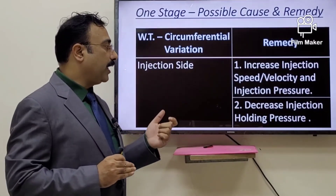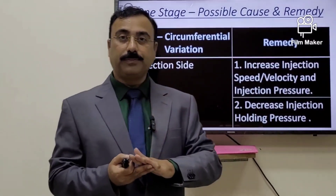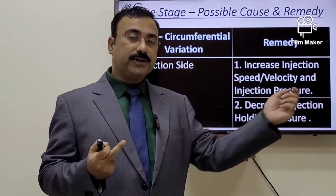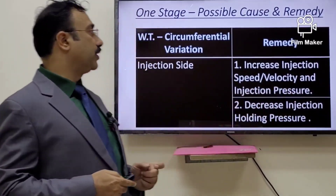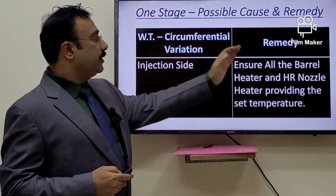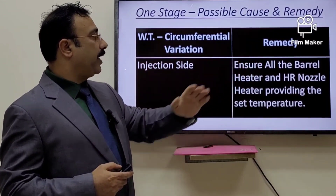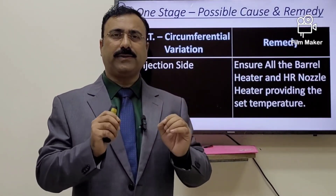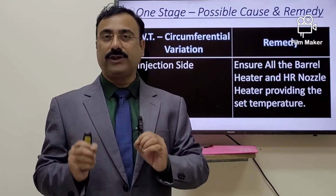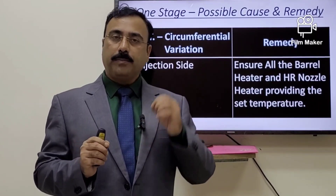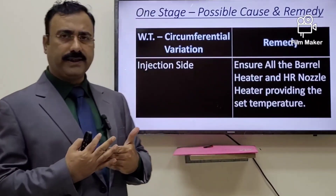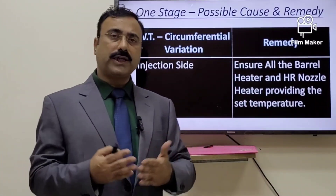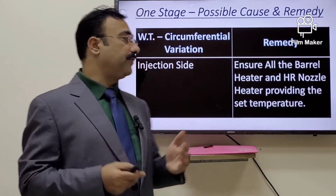At the same time, decrease the holding pressure — especially for circumferential variation, holding pressure is most responsible. Ensure all barrel heaters, HR block, and HR nozzle set temperatures match actual temperatures. A variation of plus or minus five degrees is acceptable, but not more than five degrees. If the variation is greater, call your electrician to rectify it.